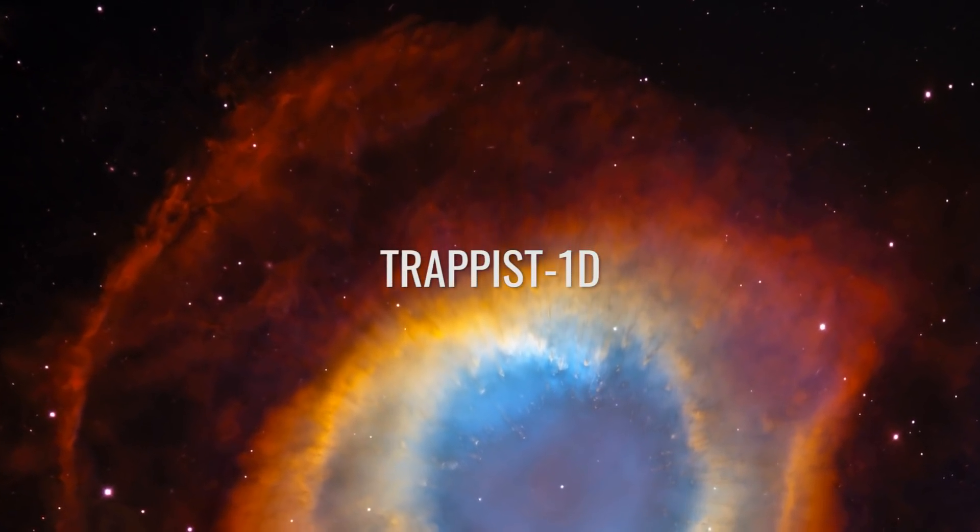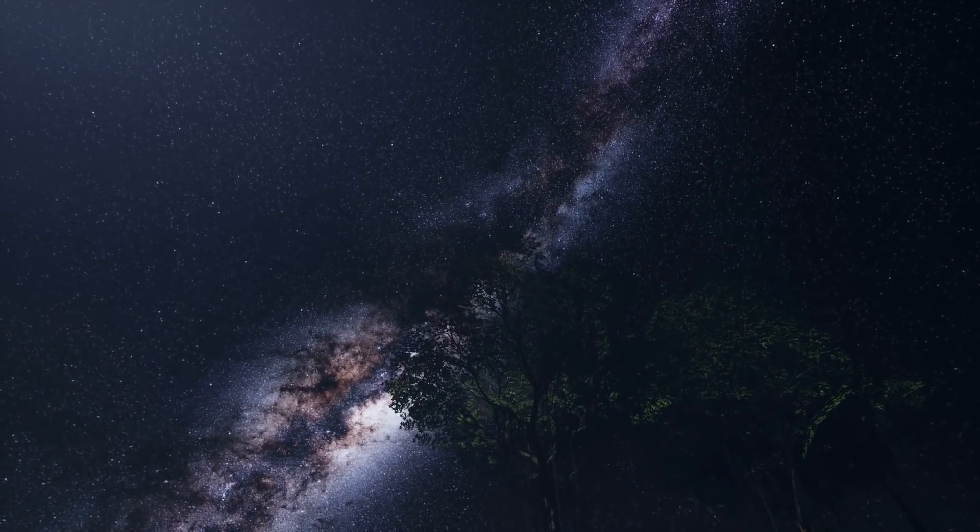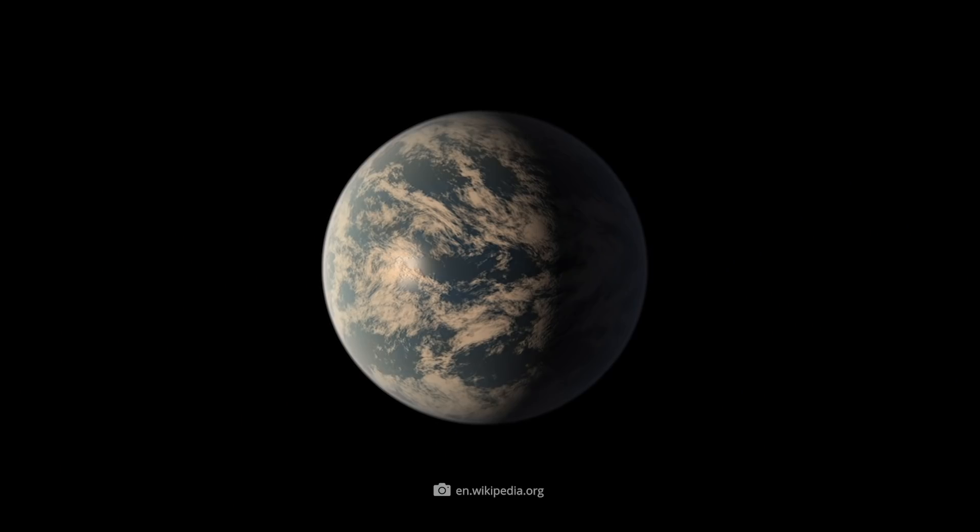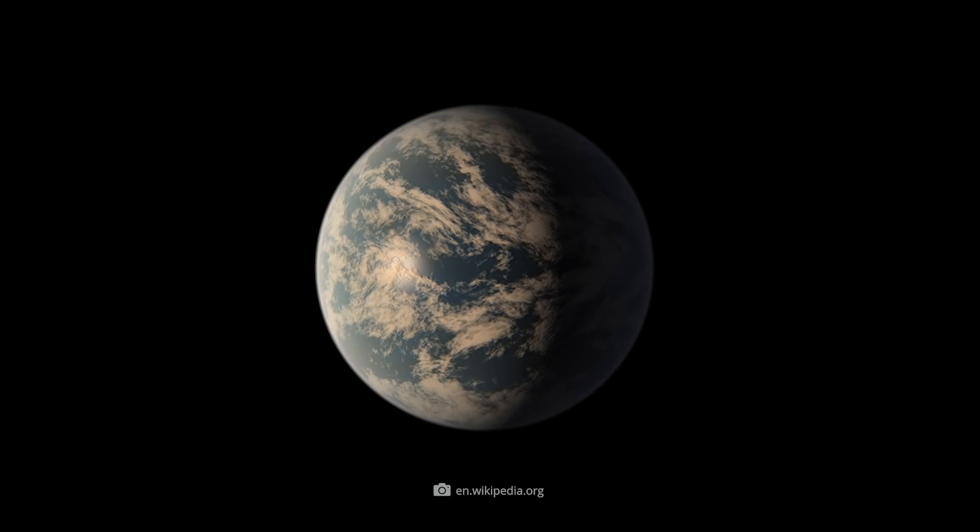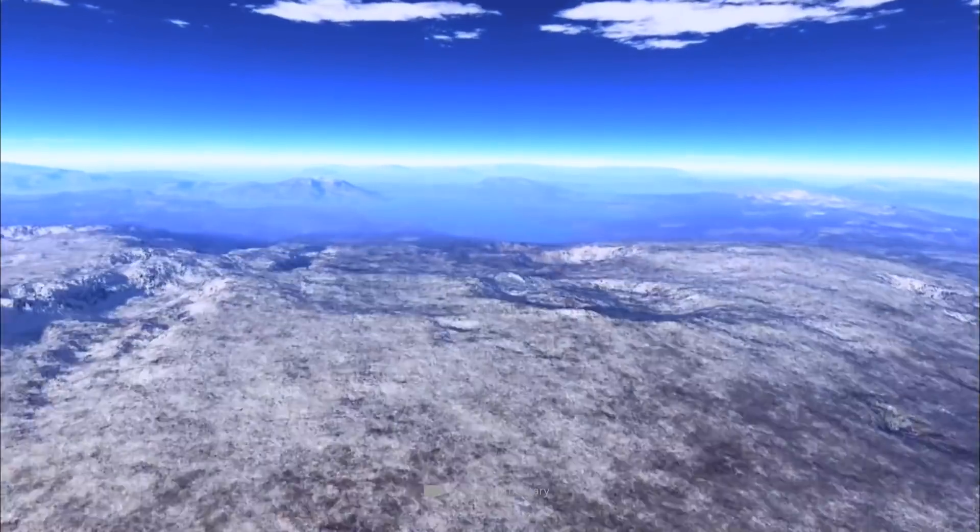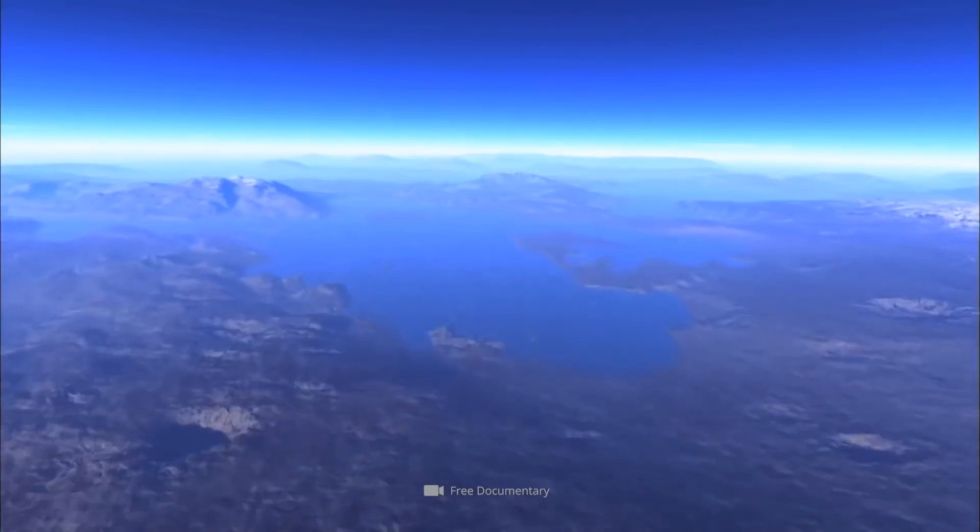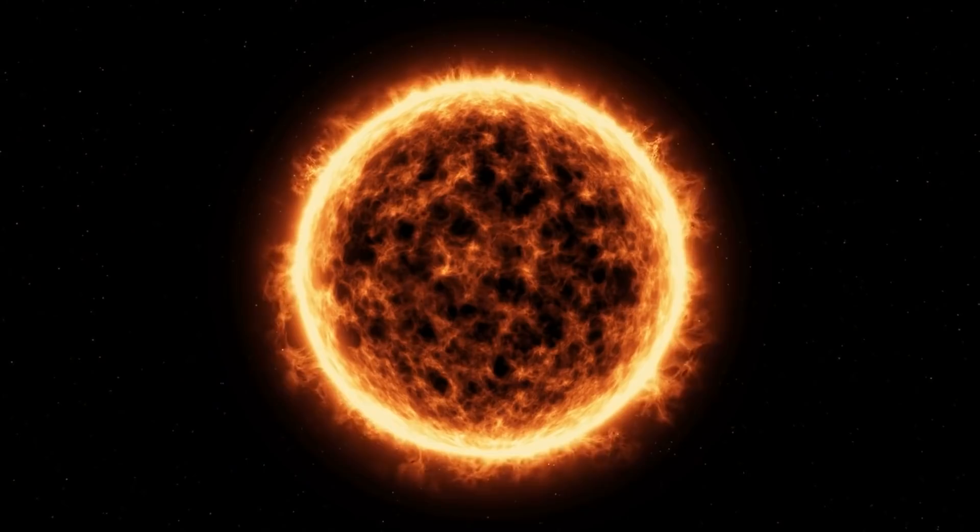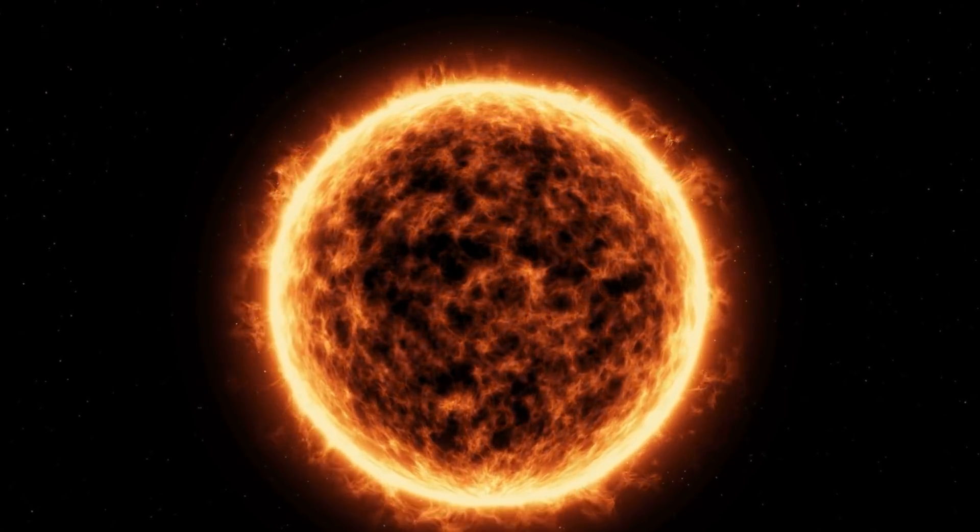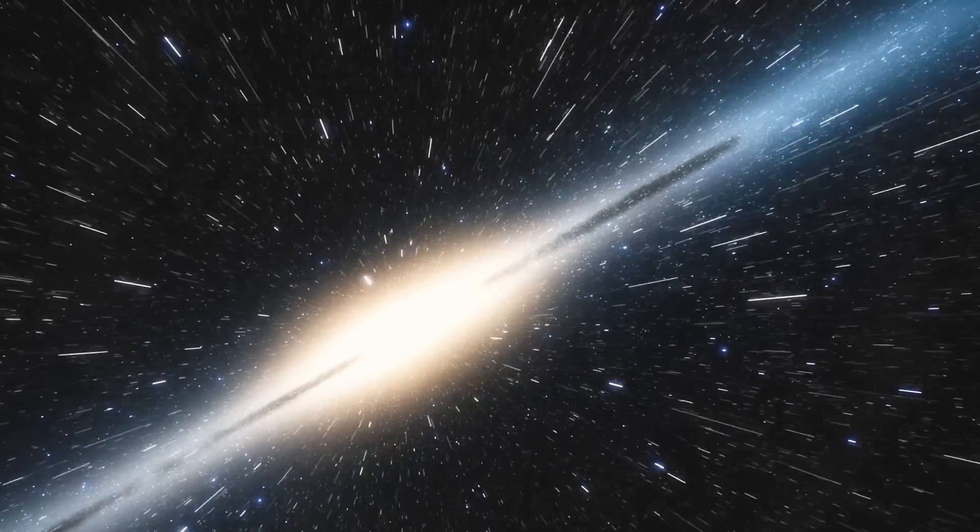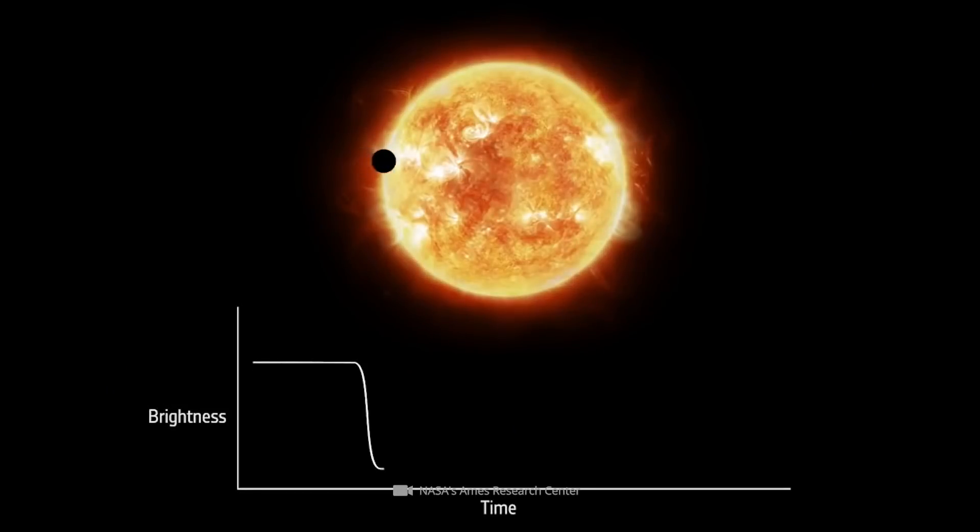TRAPPIST-1d. TRAPPIST-1d has the nice nickname 2MASS J23062928-0502285d and is a small, presumably water-rich, primarily rocky, extrasolar planet. Its star TRAPPIST-1 is special as an ultra-cool dwarf star. About 40 light-years from Earth, astronomers were also able to observe this exoplanet only by the transit method.